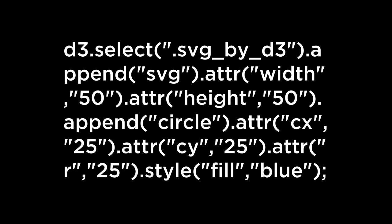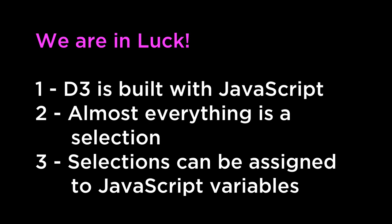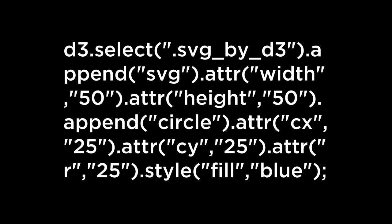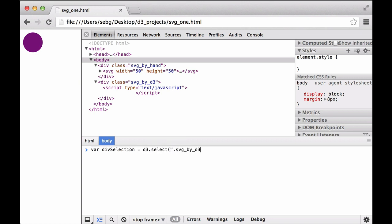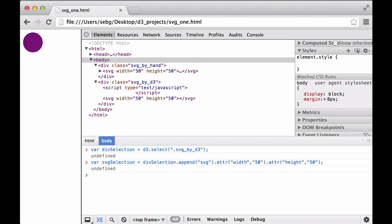D3 legibility through JavaScript variables. Thus far, we have chained our D3 commands into one long chain. While it is readable, it is hard to keep track of what the selection is, what has been appended, what attributes and values were given to it, and what styles have been added. We are in luck for three reasons: D3 is built on top of JavaScript so whitespace between function chaining is ignored; almost everything in D3 returns a selection; and those selections can be assigned to variables using JavaScript. A great way to structure your D3 code is to separate into variables the selection, whatever's been appended, and the attributes applied to those elements.